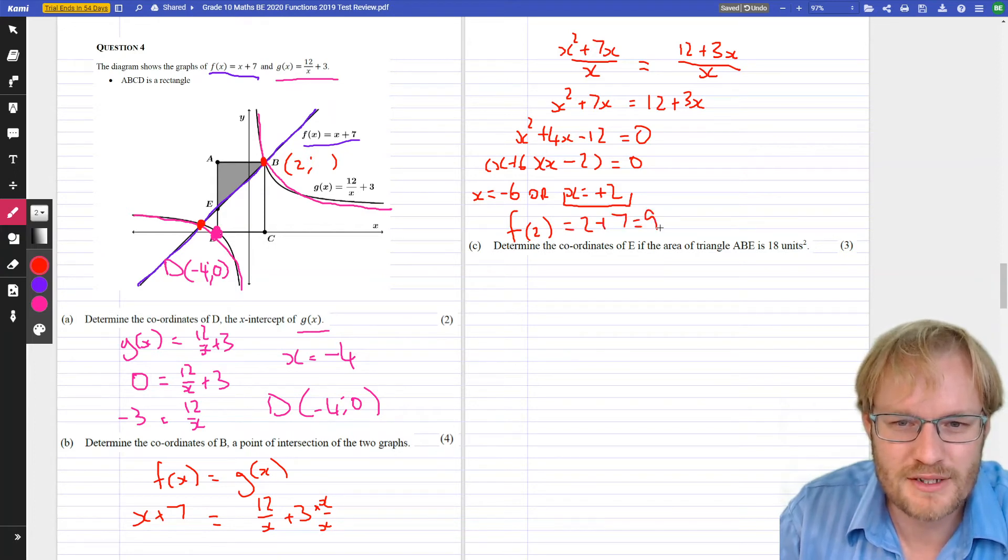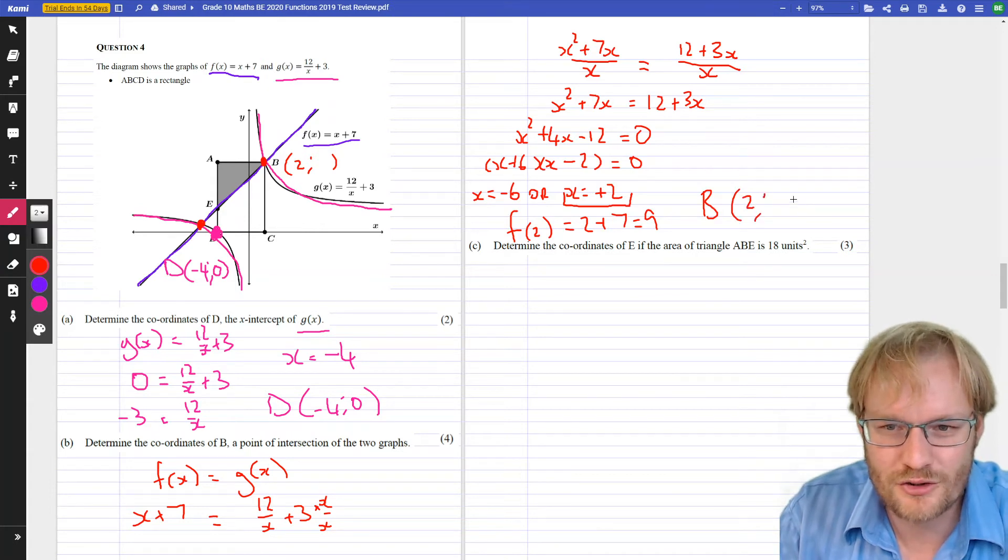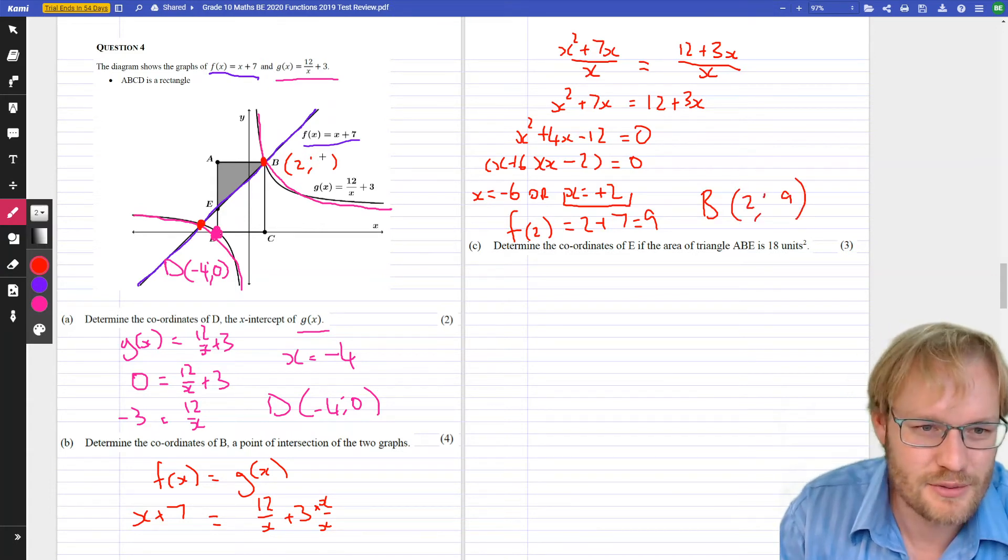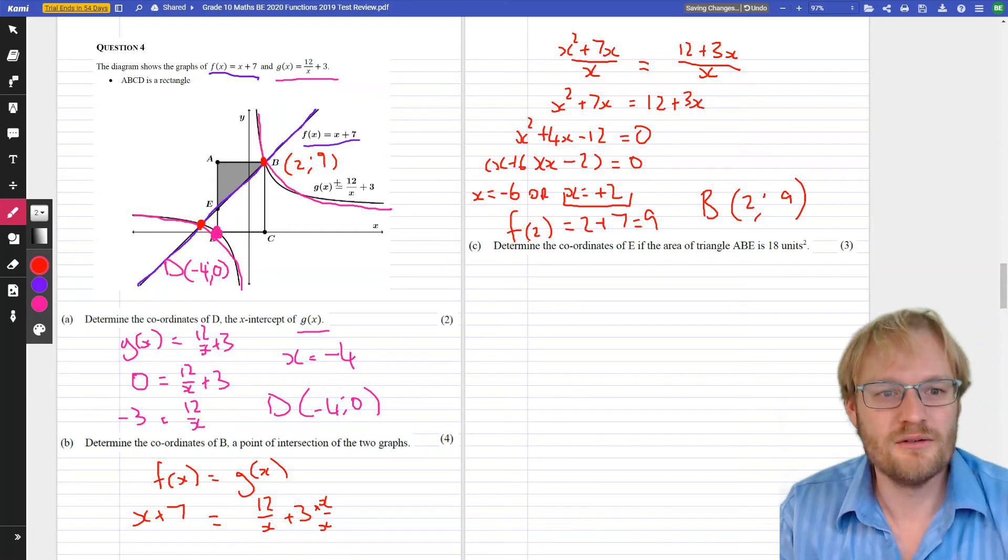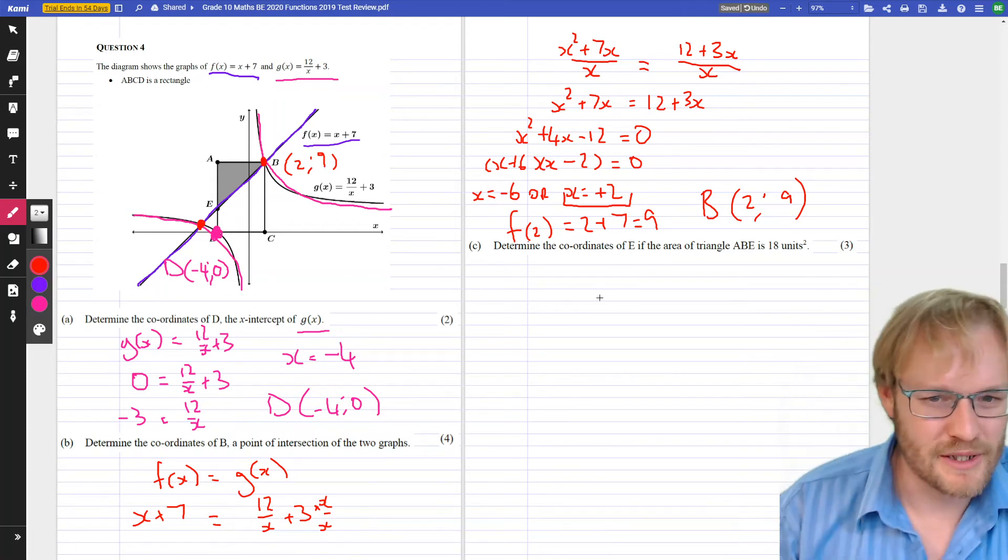So, we've got F of 2, when the input is 2, 2 plus 7, what's our output? It's 9. In other words, B, when the input is 2, the output is 9. So, let's put that into our graph.